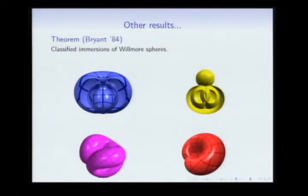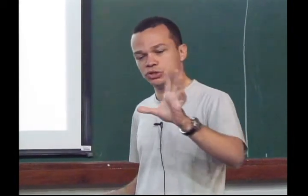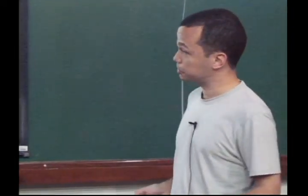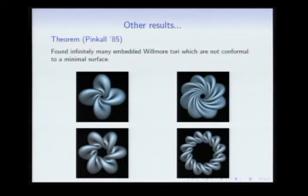There are also results not necessarily going towards the conjecture. You can study critical points — surfaces which are critical for the Willmore energy — called Willmore surfaces. In 1984, Robert Bryant classified all Willmore surfaces that are topological spheres; there is a list of them. A little later, Pinkall found many examples of tori which are critical points of the Willmore energy but not minimizers — the minimizer should be the torus of revolution I was discussing.